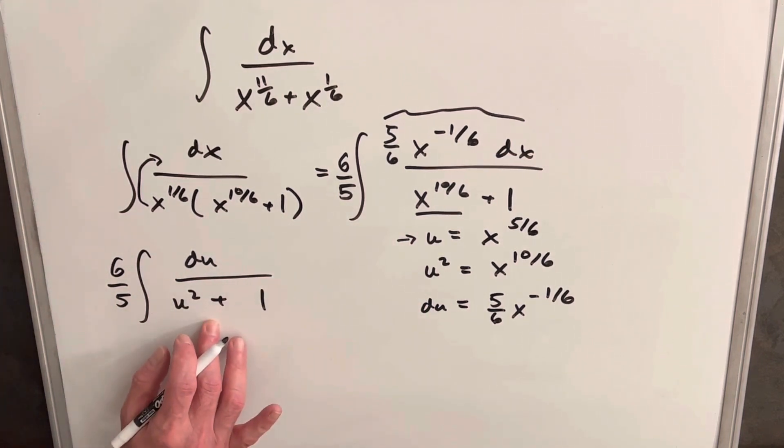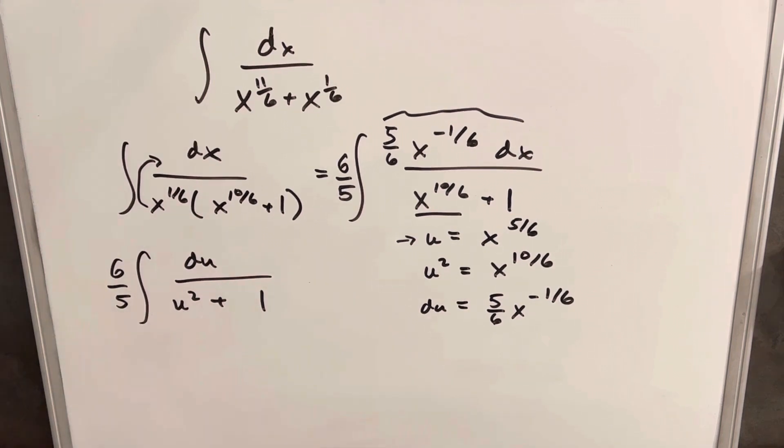And that's perfect because that is actually the integral. This is going to actually be arctan. So integrating this thing, we're going to have 6 over 5 arctan, or inverse tan, of u plus c.